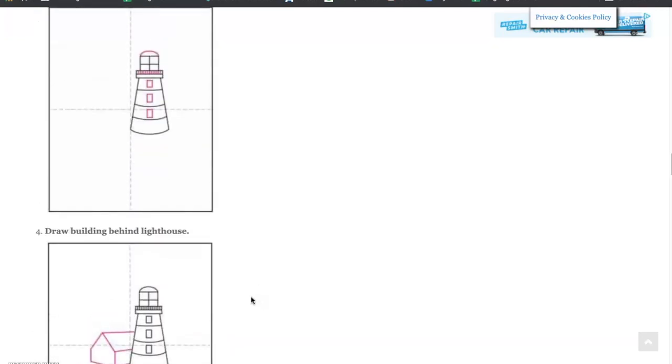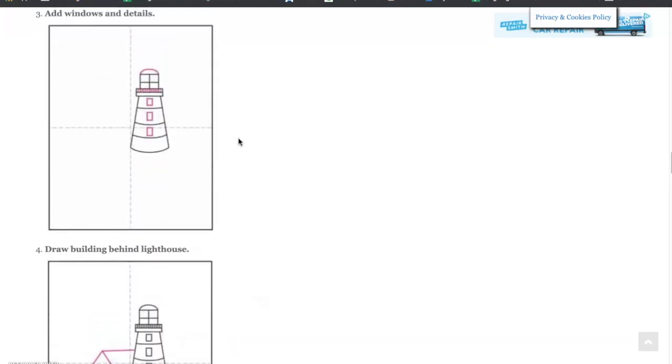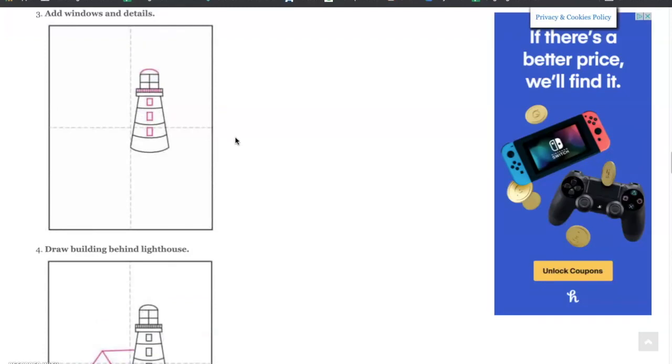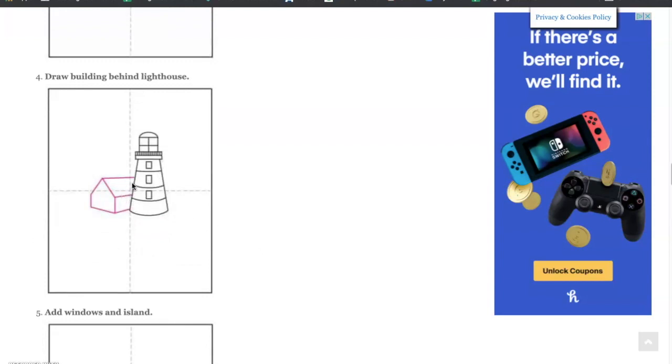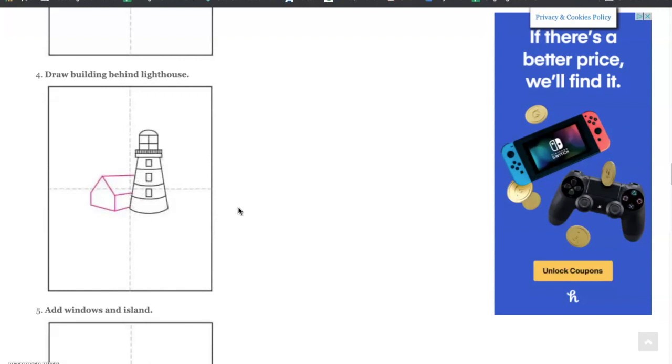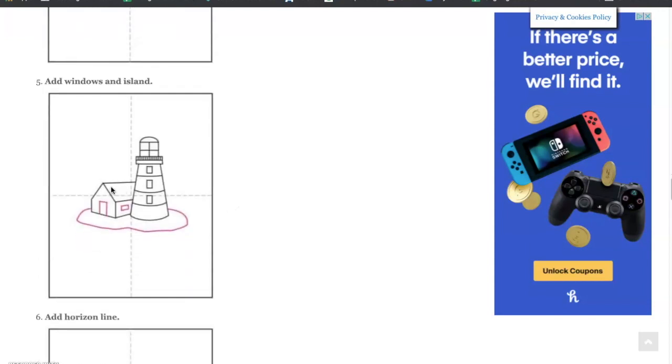Step two: add the top and the curved lines on the lighthouse. Step three: add windows and the details, including little details around the lighthouse. Step four: draw a building behind the lighthouse. Draw a pentagon and two rectangles that go behind the lighthouse to give it some depth. Step five: add the windows and the door on the building, and draw the island around the lighthouse.